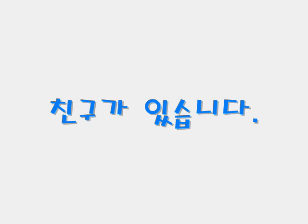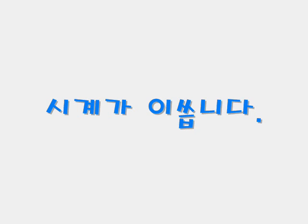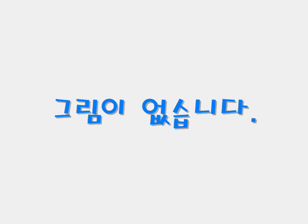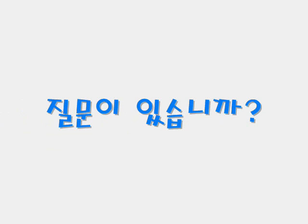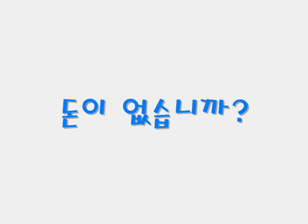친구가 있습니다. 친구가 있습니다. It means I have a friend or there is a friend. 시계가 있습니다. 시계가 있습니다. It means I have a watch or there is a watch. 질문이 있습니까? 질문이 있습니까? Do you have any questions or are there any questions? 돈이 없습니까? You don't have any money. Isn't there any money?